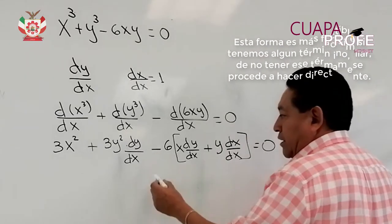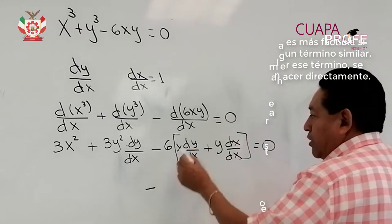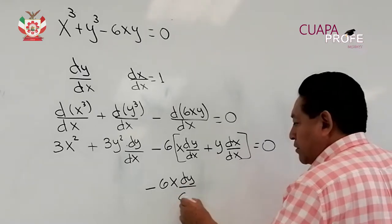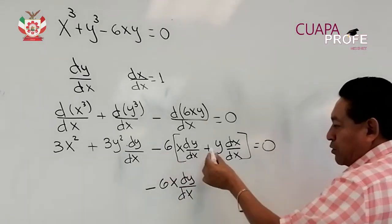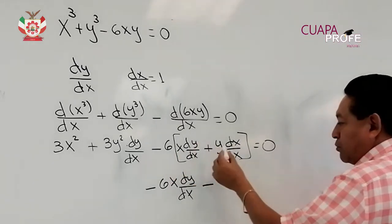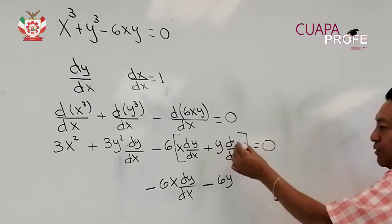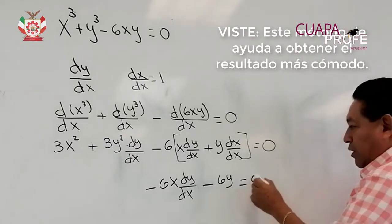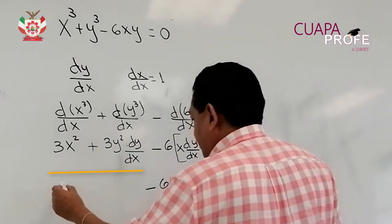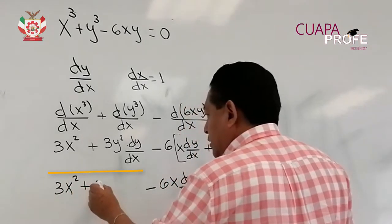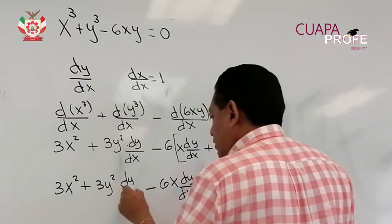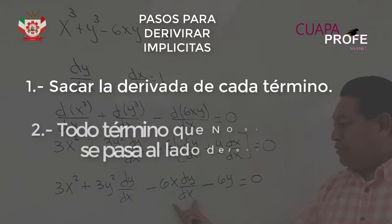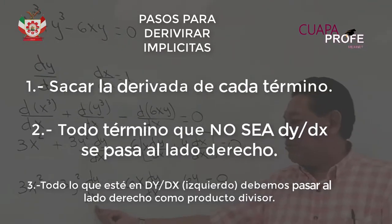Este término quedaría de la siguiente manera: menos 6x por la derivada de y con respecto de x, y luego menos 6y, ya que la derivada de x con respecto de x queda 1 y no es necesario escribirlo, y esto será igual a 0. Bajamos los siguientes términos: 3x cuadrada más 3y cuadrada por la derivada de y con respecto de x. Como podemos observar, hay un término y otro término que tienen como factores la derivada de y con respecto de x.